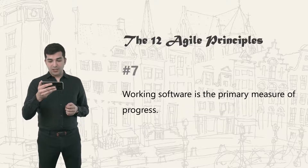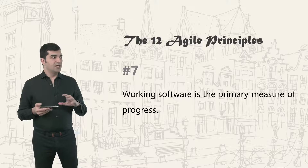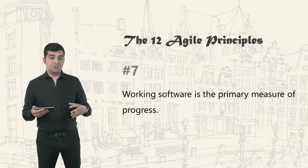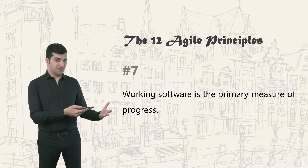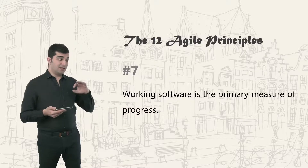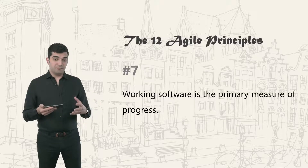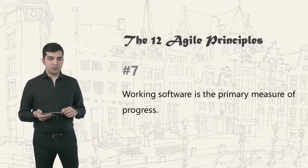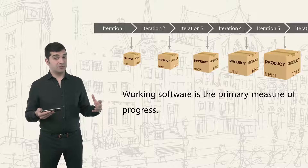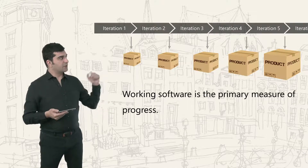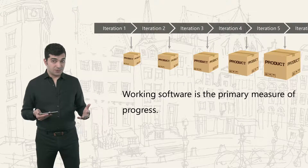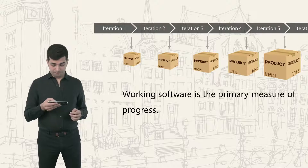The seventh principle: working software is the primary measure of progress. Many people in many projects measure the wrong thing and end up achieving what they didn't want. You get what you measure. Measuring progress has to be about the product — ideally about the value you create. Things like lines of code or number of man-hours spent are not good measures.